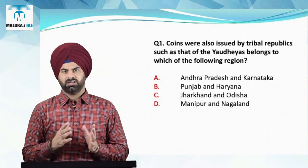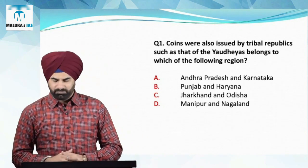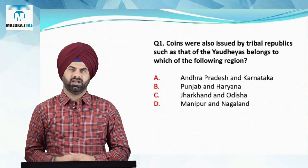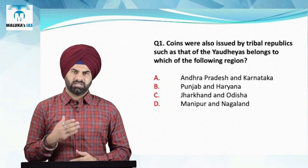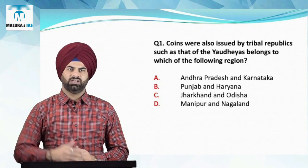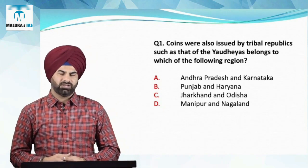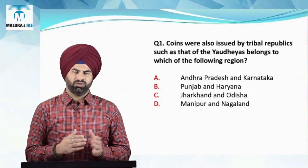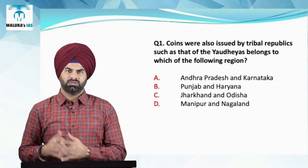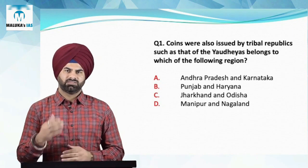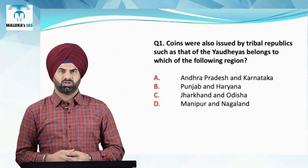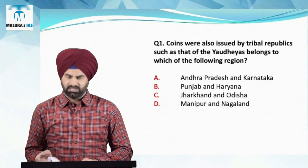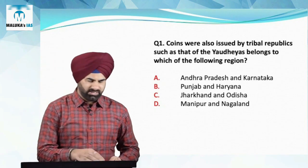These are important republics that were there in around the Punjab and Haryana region, and some of them were also there in the foothills of the Himalayas. Many republics continued even during the Gupta period when they were subdued by Samudragupta and others. Therefore the answer is Punjab and Haryana.